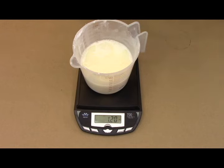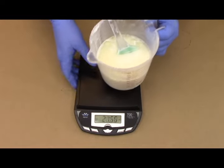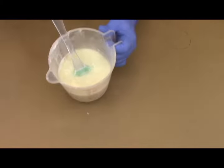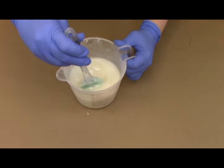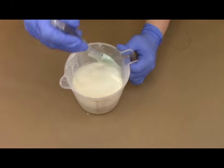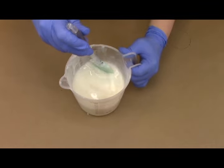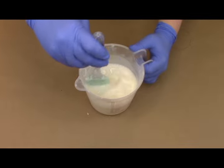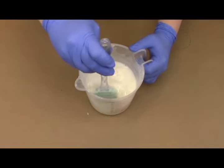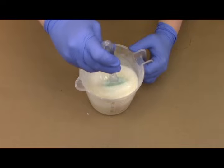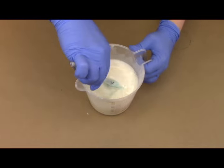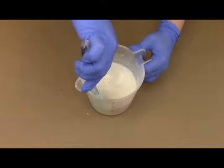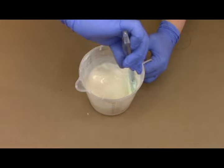So I'm going to move the scale out of the way and get it all nice and incorporated. You want to make sure that you don't see any of that fragrance oil separated out. But try not to stir too hard otherwise you might create some air bubbles and you could splash it onto your skin which would not feel good since this is hot soap. So I'm going to get this all stirred up.